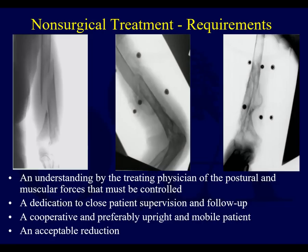Here are some of the requirements traditionally for non-surgical treatment. You have to understand the anatomy and muscular deforming forces, and also the postural deforming forces and the forces that can help you with the reduction. Non-surgical treatment is a little more tedious than surgical treatment — it requires seeing the patient every week, lots of adjustments to fitting the brace properly, checking the skin. You have to have a cooperative, preferably upright and mobile patient — the opposite being, for example, a trauma patient with a head injury in the ICU laying supine.